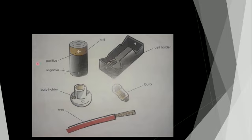All of you take your Learner's book, page number 52. You can see one picture — see this picture. What is this one? It is called a battery or cell. A battery has two terminals — this is called a positive terminal and this one is called a negative terminal. Then what is this one? This is called a bulb holder. And this one is a bulb — this bulb is kept in the bulb holder. Then what is this one? It is called a wire. And what is this one? It is a cell holder — you can keep the cell here.